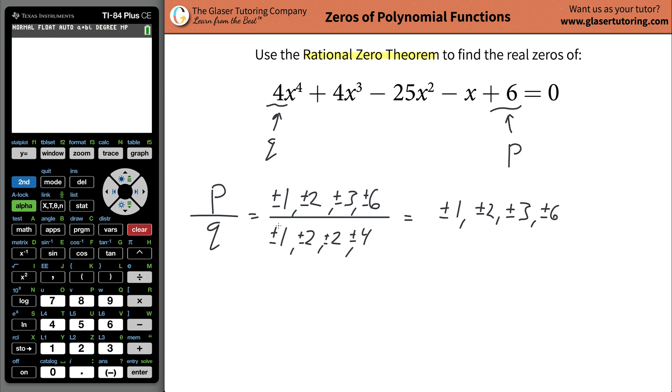And now what I need to do is list all the individual possibilities. In other words, I have to do this factor divided by this factor. So, positive negative 1 divided by positive negative 1 will give you a positive negative 1. Then I have to do this factor divided by this factor. So, positive negative 2 divided by positive negative 1 is going to give you a positive negative 2. Then I got to do 3 over 1, that's going to give you a positive negative 3. Then, positive negative 6.